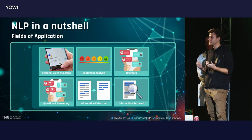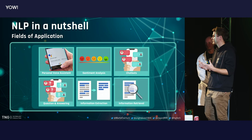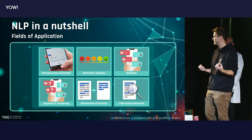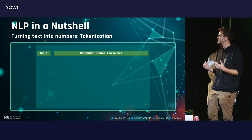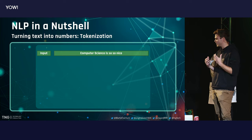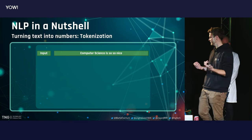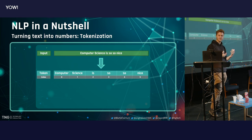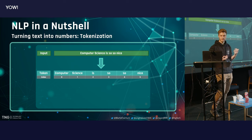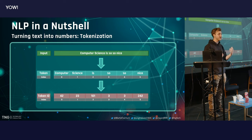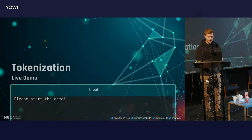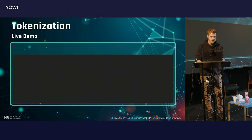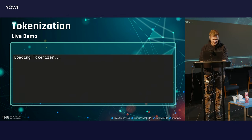We want to do NLP with neural networks. The big issue is that neural networks work with numbers — so how do we put text in? In comes a technique called tokenization. For example, take the sentence 'computer science is so, so nice.' We split it into individual tokens — computer, science, etc. — and assign each token a number. So 'computer' becomes 42, and 'so' becomes 3. Both occurrences of 'so' have the same token ID. And we also have a live demo for that.